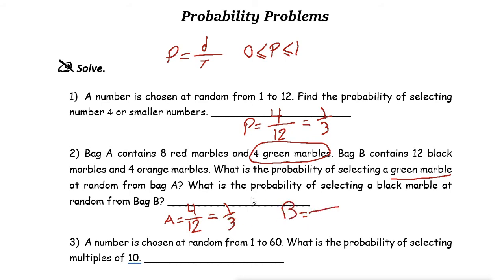The probability for bag B: what is the probability of selecting a black marble at random from bag B? Bag B contains twelve black marbles and four orange marbles, so the total is sixteen. The desired outcome is twelve black marbles. So twelve out of sixteen — divide by four — you get three over four. The probability of selecting a black marble at random from bag B is three-fourths, or seventy-five percent.